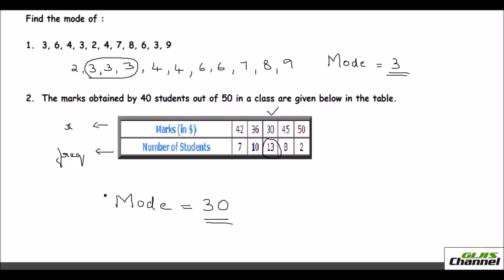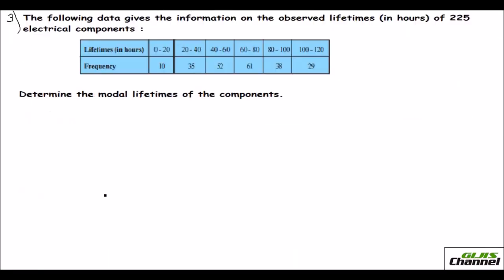And the next one is when you get the grouped data. In that case, you will have the class interval like here and the frequency given. So these type of data are grouped data. So what you do is, here you need to find the modal lifetime. See, the following data gives the information on the observed lifetime in hours of 225 electrical components. The details is given in the table. You are to determine the modal lifetimes of the components. So you are going to find the mode.